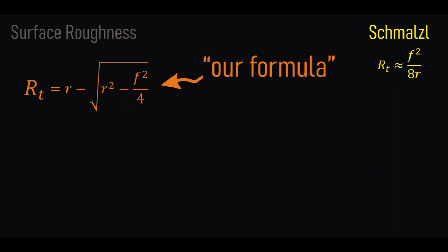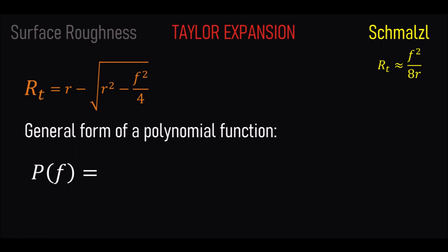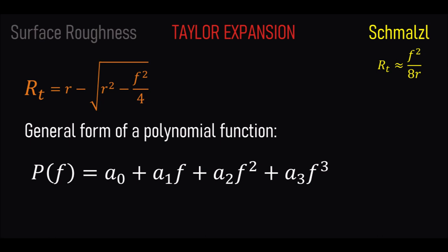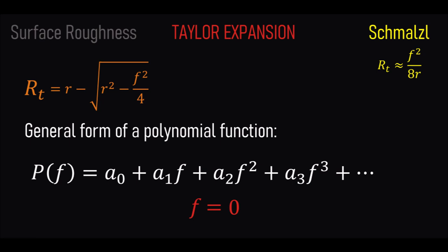Let's calculate the Taylor expansion of our formula and keep the Schmalz formula at the top as a reminder. For those who do not know anything about Taylor series, I will show a step-by-step explanation here for this specific case, assuming you have a basic knowledge of calculus and know how to differentiate a function. Let's start by writing the generic form of a polynomial. Our variable here is the feed rate F. This will have a constant term A_0, a term proportional to F with coefficient A_1, a term proportional to F squared with coefficient A_2, a term proportional to F cubed with coefficient A_3, and so on. We want to find the polynomial that best approximates our original function, and for this purpose we first choose the center of the Taylor expansion — the point close to which we want the best approximation. Since a low roughness value is often desired, we choose F equals zero as the center.